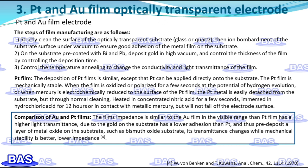When the platinum film is oxidized or polarized for a few seconds at the hydrogen evolution potential, or when mercury is electrochemically reduced to the surface of the platinum film, the platinum metal easily detaches from the substrate. However, through normal cleaning procedures — heating in concentrated nitric acid for a few seconds, immersion in hydrochloric acid for 12 hours, or contact with metallic mercury — the film will not fall off the electrode surface. The gold film with similar impedance has higher light transmittance than platinum film in the visible range. Since gold has lower adhesion on the substrate than platinum, a layer of metal oxide such as bismuth oxide is deposited on the substrate in advance, providing better mechanical stability and lower impedance while maintaining light transmittance.